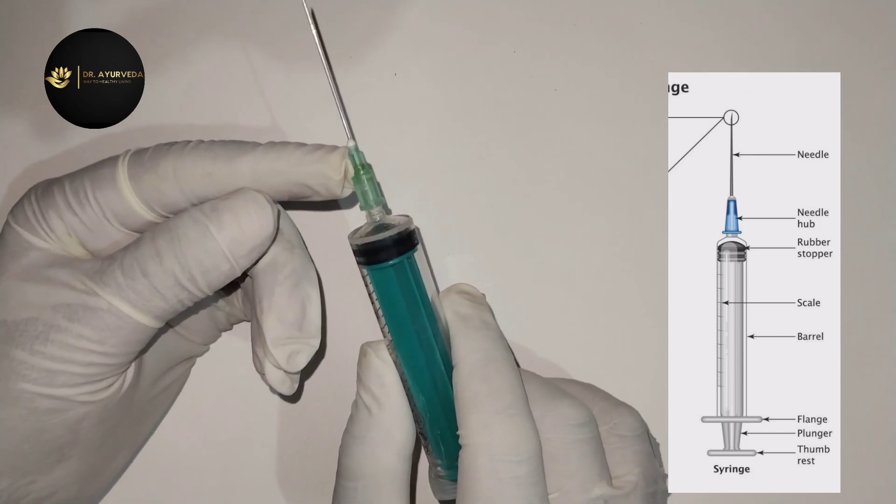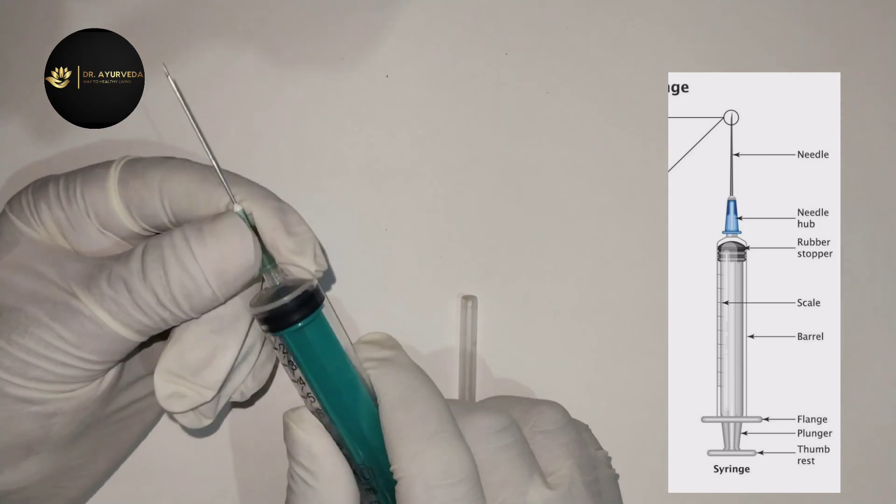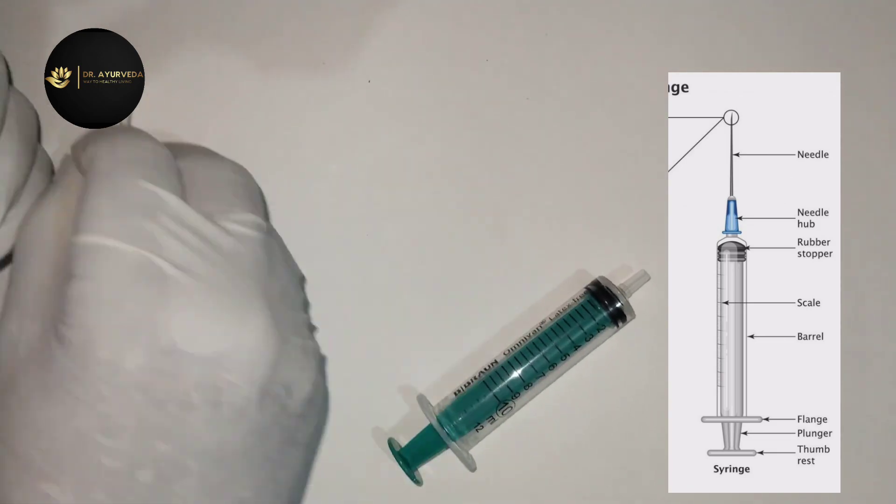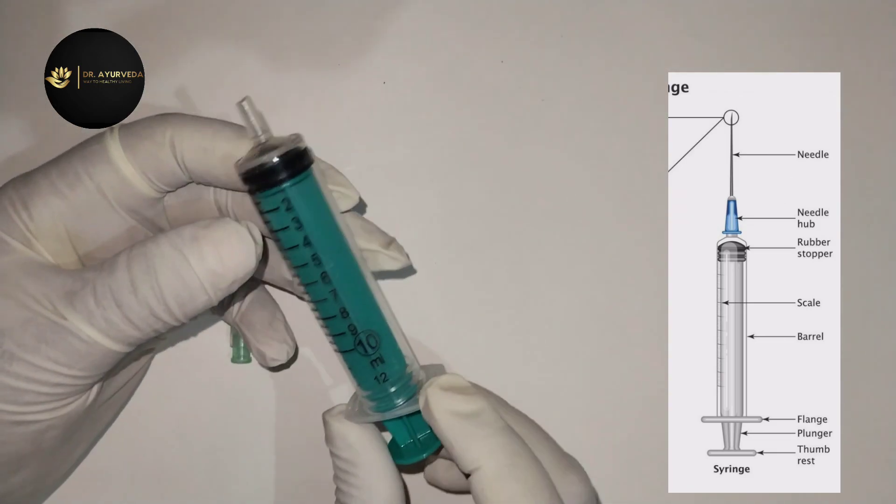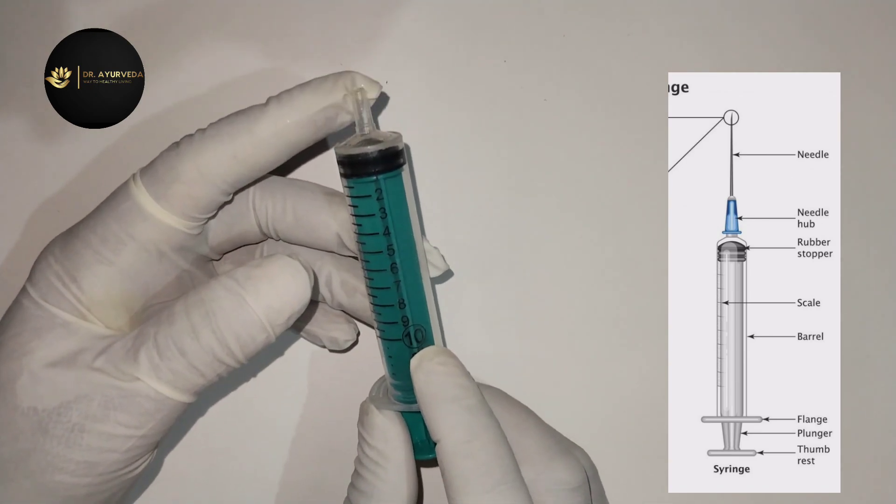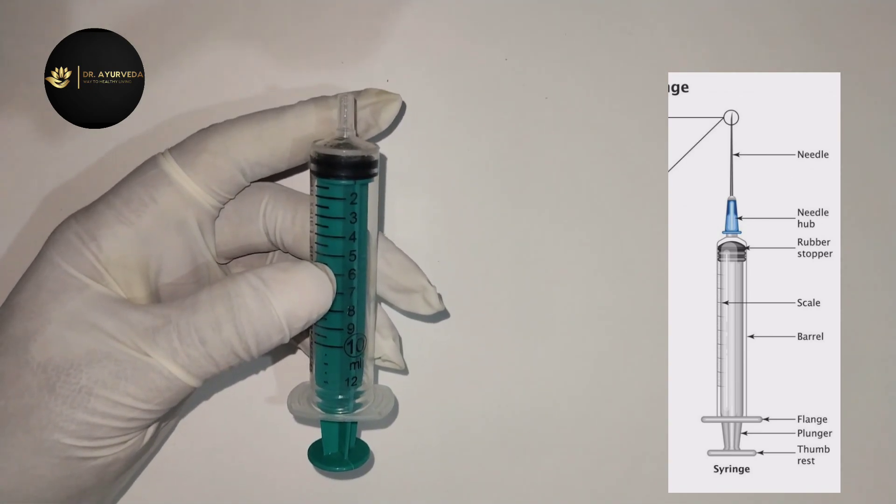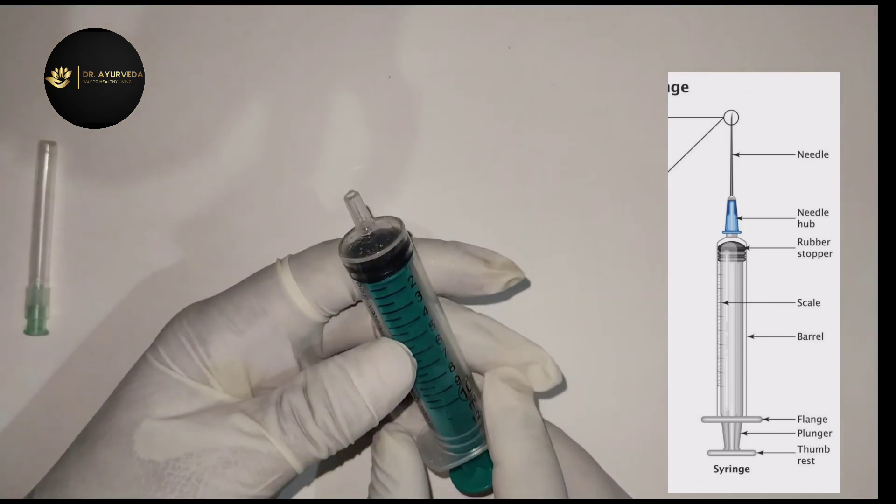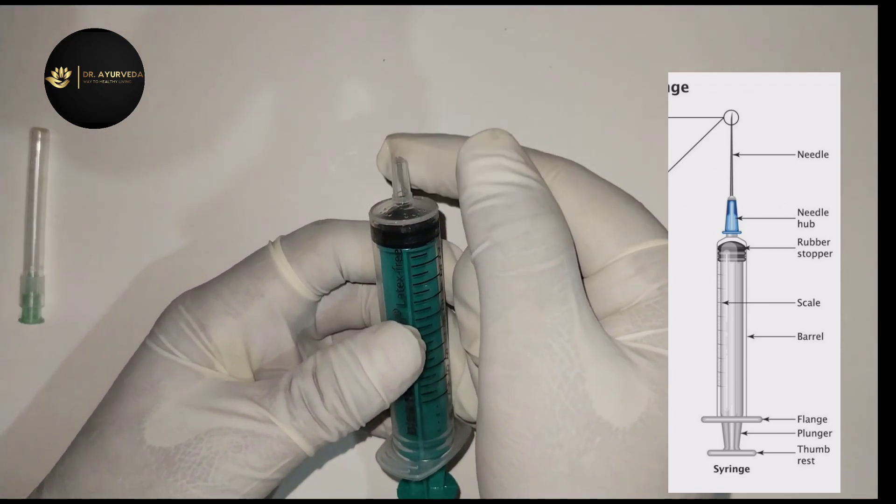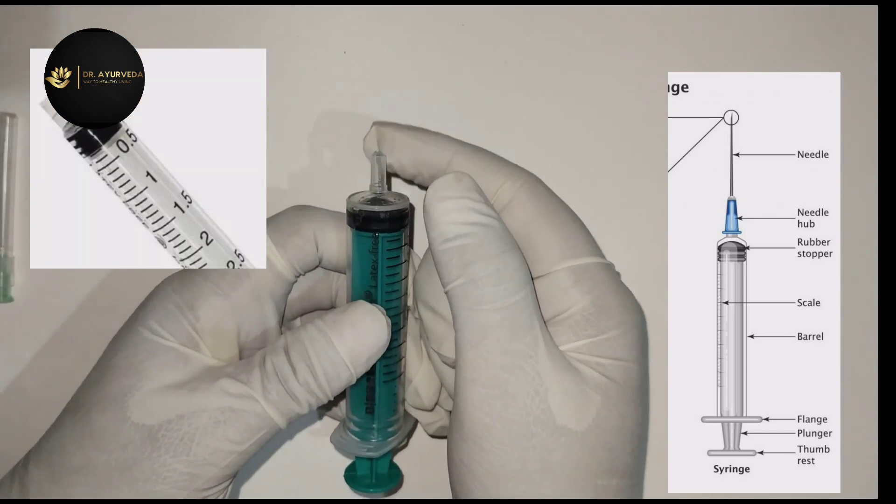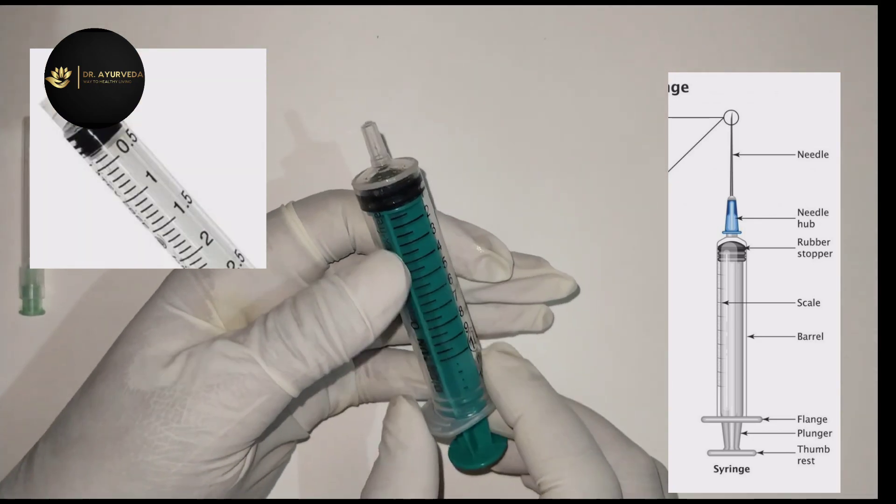The needle hub is the part which is the adapter. Here is the cap, here is the needle, and this area is the tip.